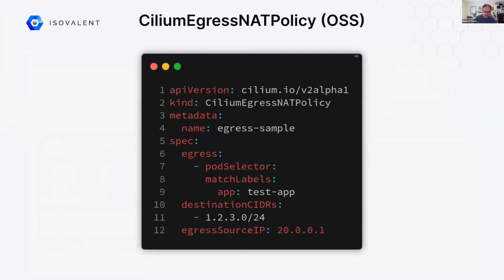So what does it look like in Kubernetes? The resource just looks like this — this is the open source version. We can specify how to select a pod; here we have a pod that matches the labels app equals test app. For this pod reaching out to this CIDR, we want to go out through this IP, and Cilium will figure out how to use this IP and how to select the nodes to exit the cluster. This makes it very easy to filter out IPs going out of the cluster when you need to use traditional firewalls in your infrastructure.